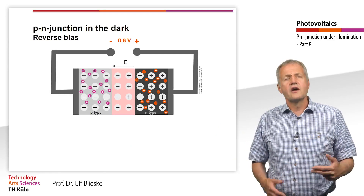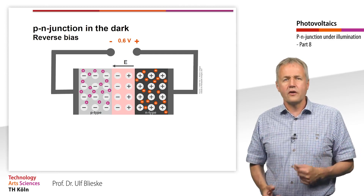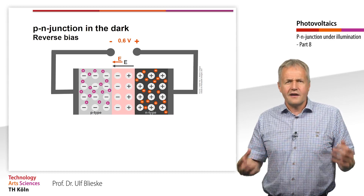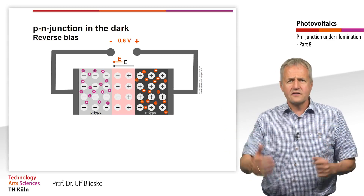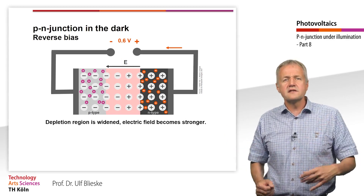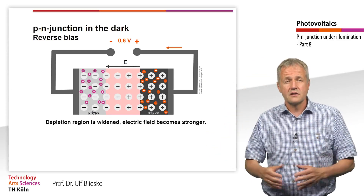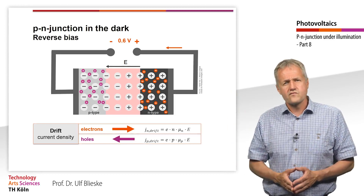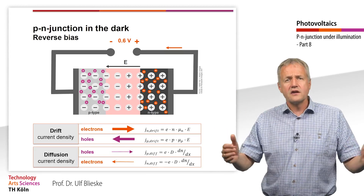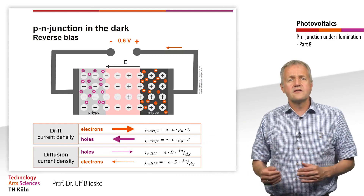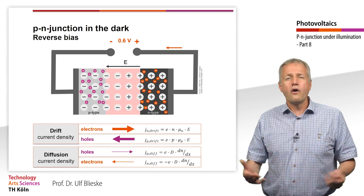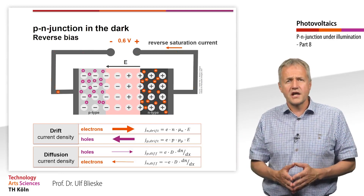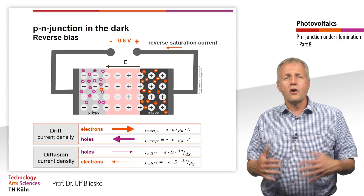We now consider the p-n junction at reverse bias of about 0.6 V in the dark. The n-region is now connected to the positive pole and the p-region to the negative pole. The electric field of the applied voltage amplifies the electric field of the p-n junction. In sum, the electric field increases, and so does the depletion region. Due to the larger electric field, the drift current density of the minorities can increase. However, the larger width of the depletion region decreases dn/dx, and thus the diffusion current densities of the majorities. Overall, the drift currents dominate, but since they are proportional to the minority charge carrier concentration — which is very small — only a very small current flow occurs.